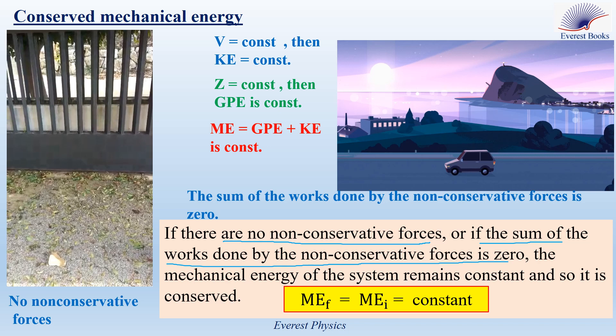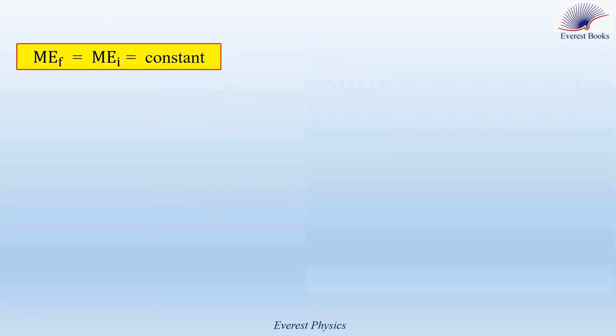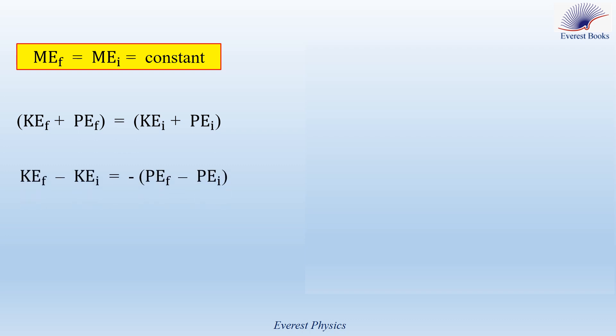This gives us ME_final = ME_initial = constant. Expanding: KE_final + PE_final = KE_initial + PE_initial. Rearranging: KE_final − KE_initial = −(PE_final − PE_initial), which means ΔKE = −ΔPE. This equation says that any increase in the kinetic energy of a system with conserved mechanical energy must be equal to the decrease in its potential energy, and vice versa.